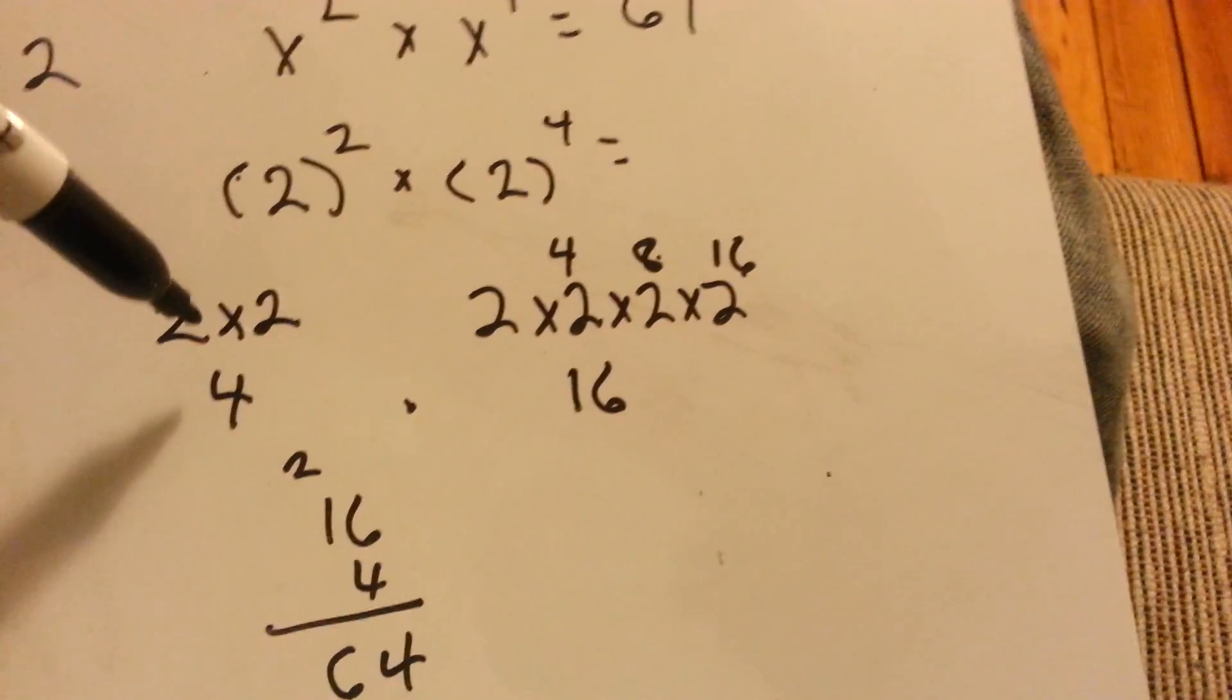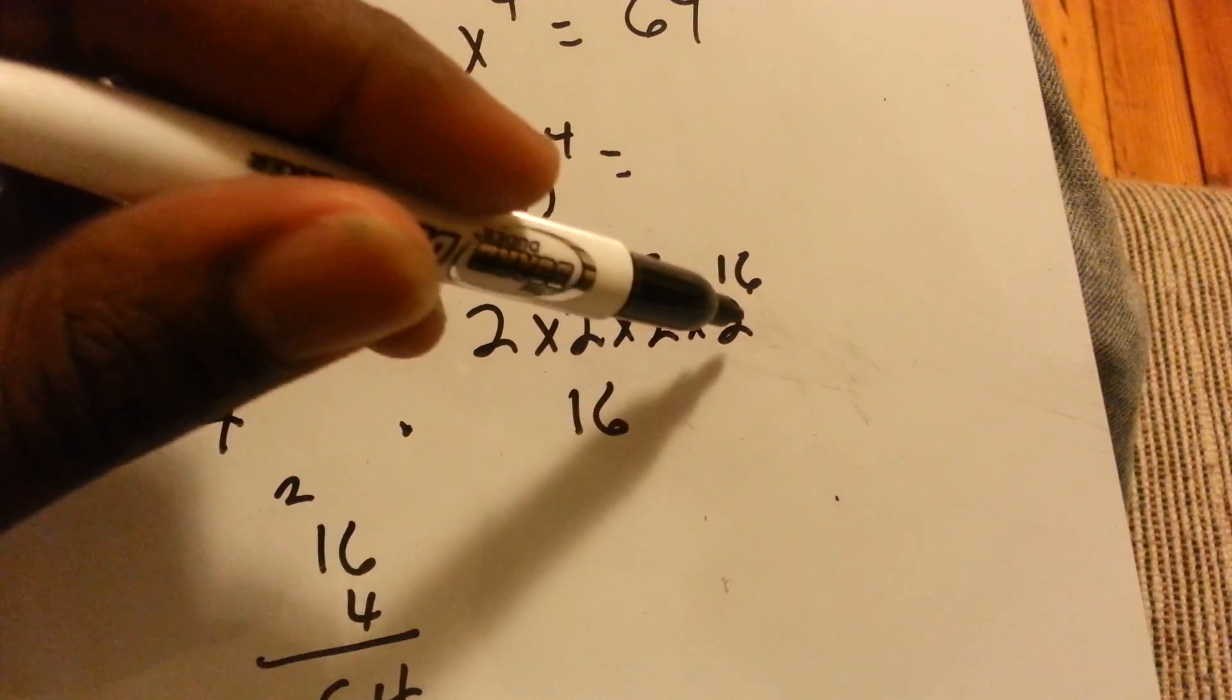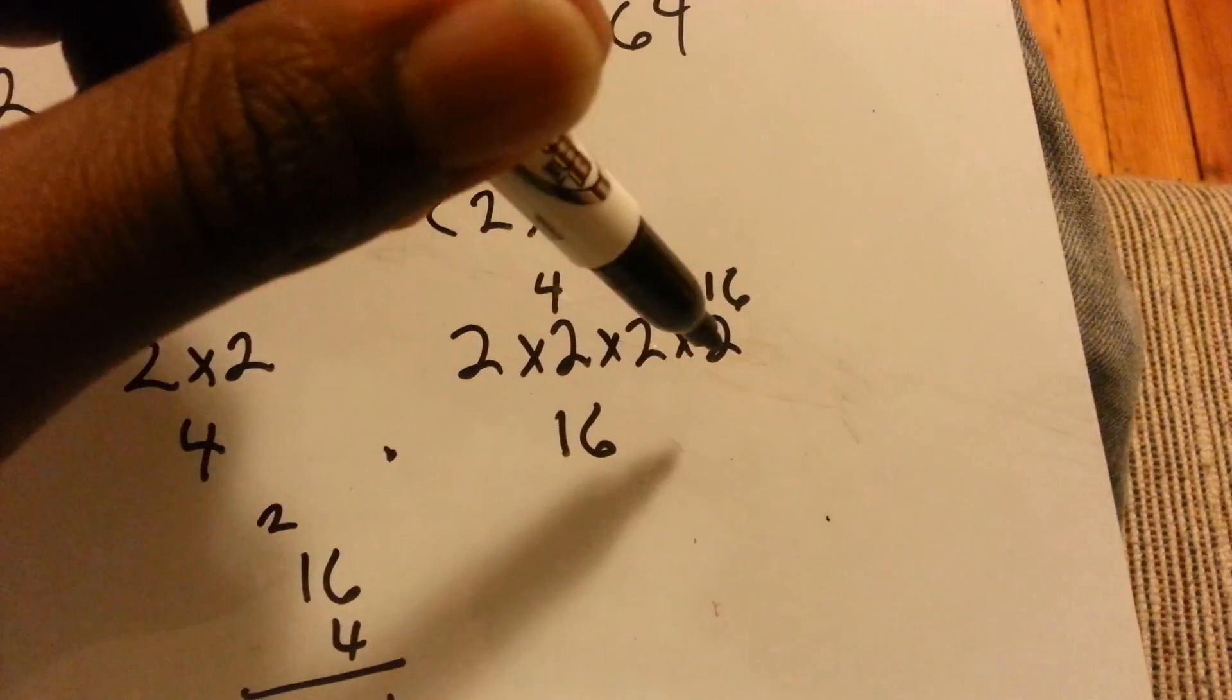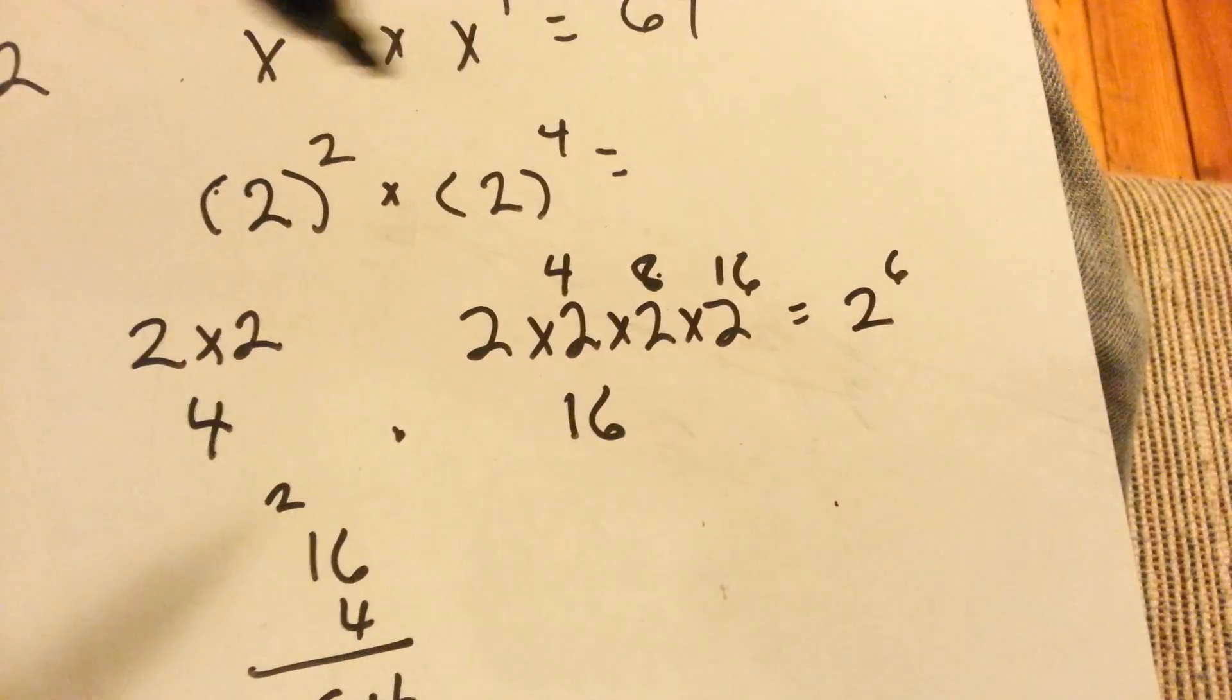Because to get 64, you'd have 2 to the 6th—that's one, two, three, four, five, six, or 2 to the 6.